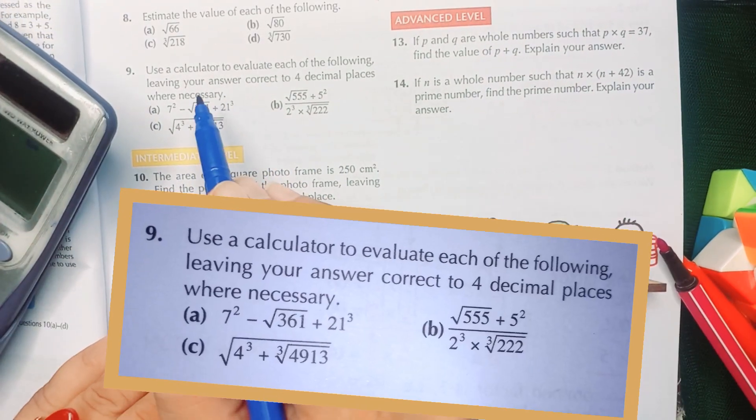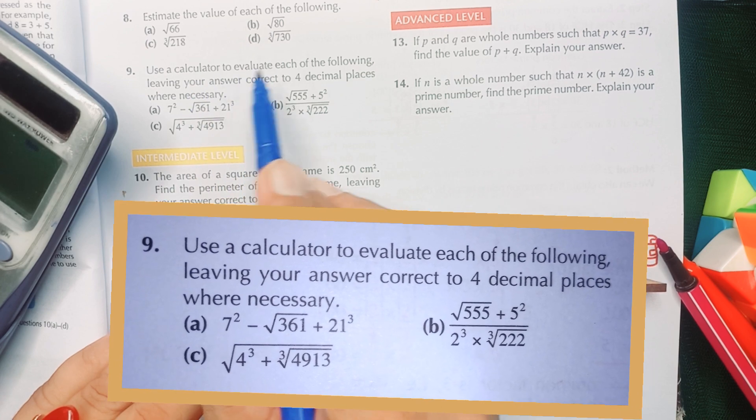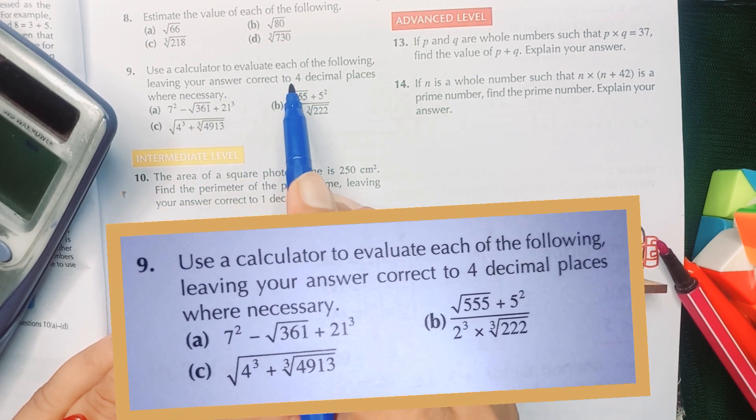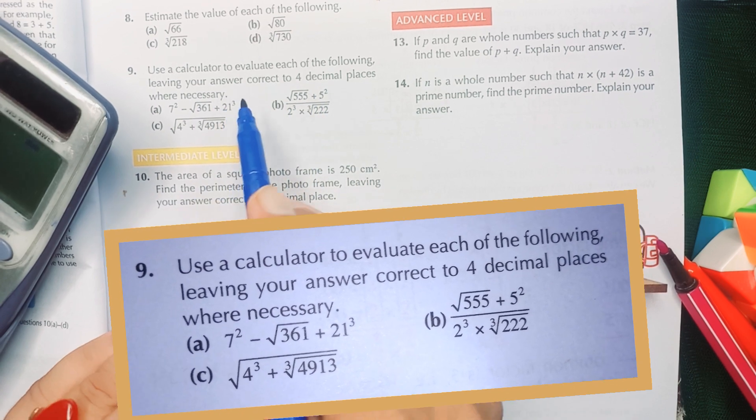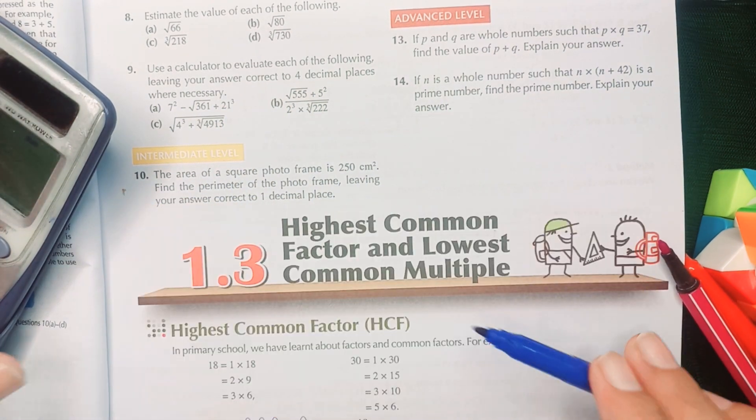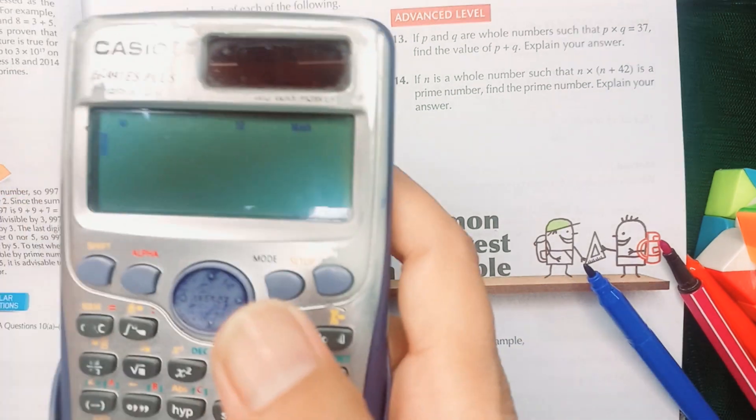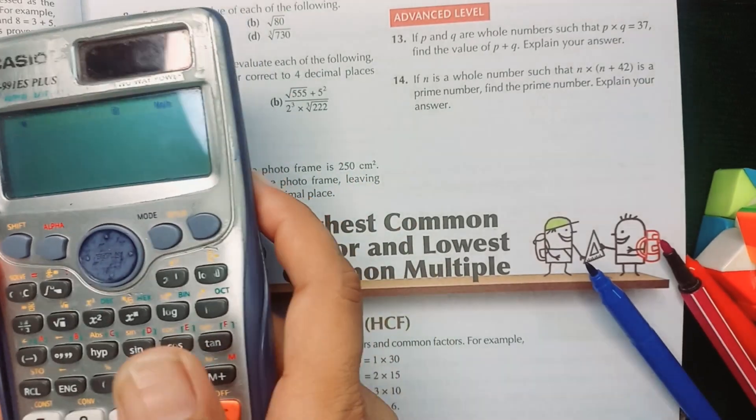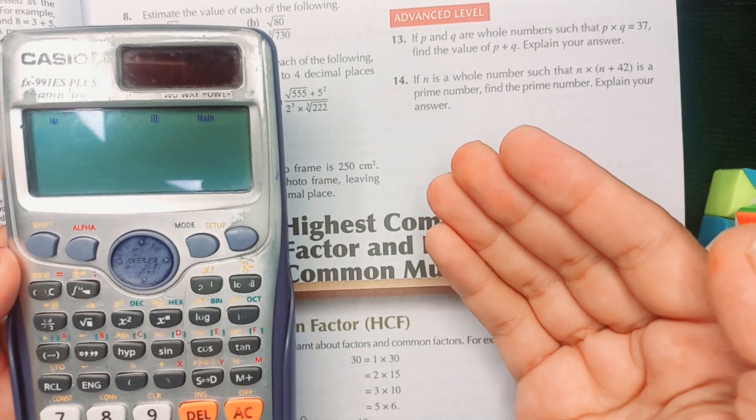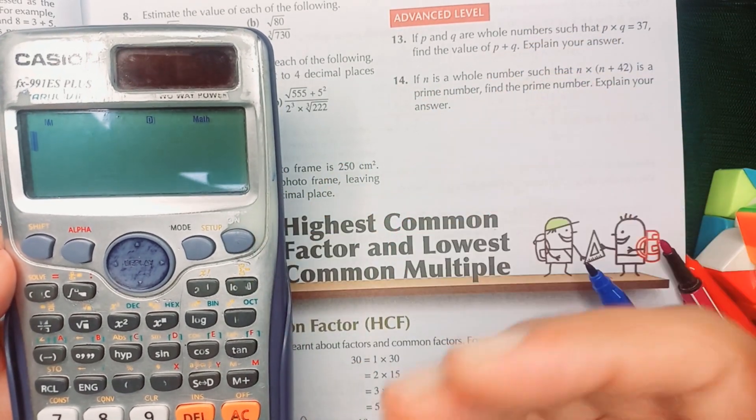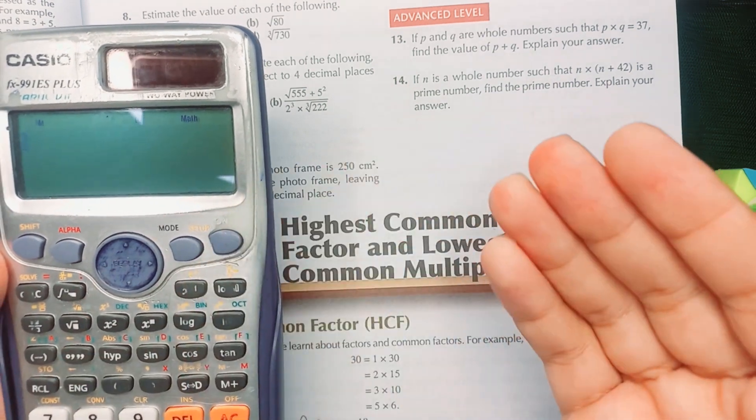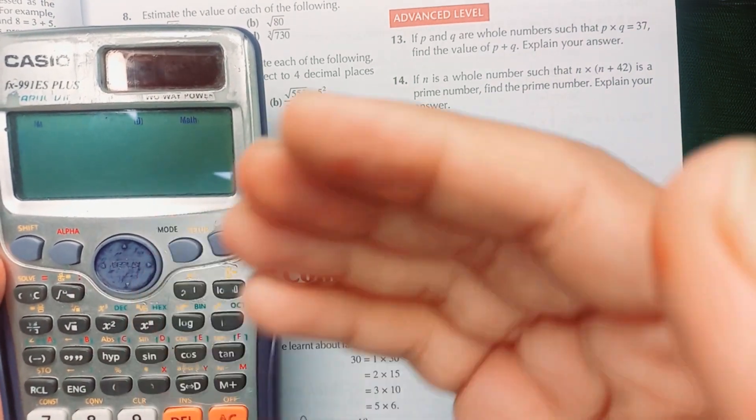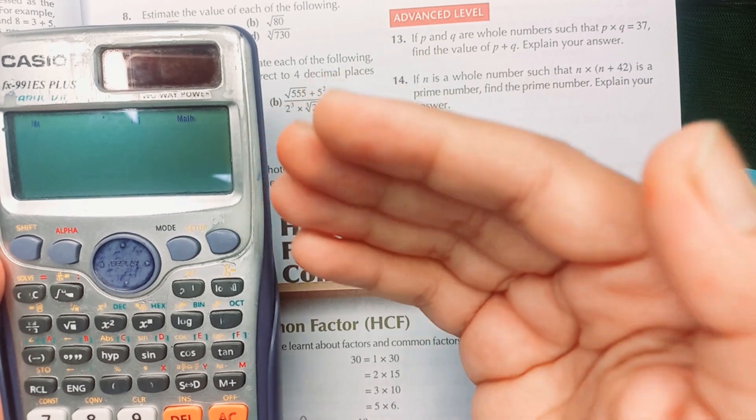Dear students, question number 9: we have to use a calculator to evaluate each of the following, leaving your answer correct to four decimal places where necessary. Basically, we have to use the calculator to calculate squares, square roots, cube and cube roots. How to use a calculator to find squares, square roots, cube, and cube roots?